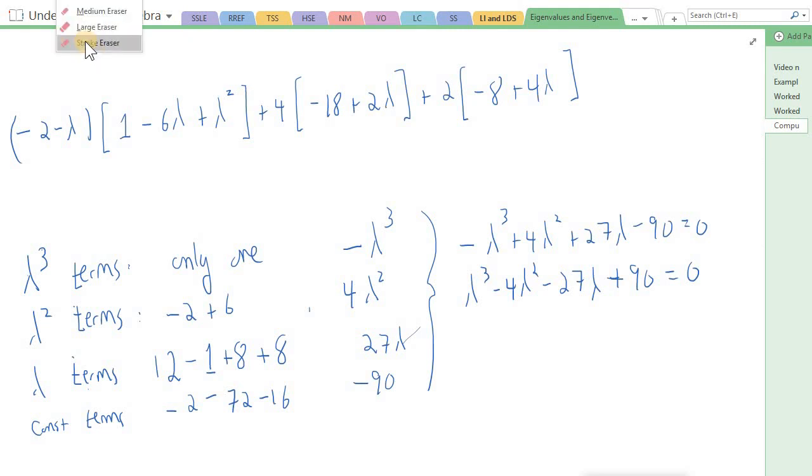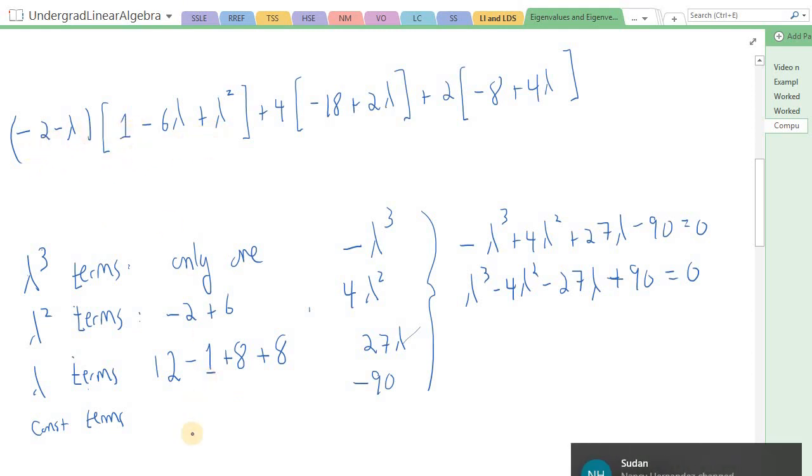Now, let's try the next one and see if we can do this in a similar way. And so let's follow this out. Now, the constant terms from the first group here, I have the minus 2 times 1. So that's minus 2. Then from here, I'm going to have 4 times minus 18. So that's minus 4 times 18. I think that's minus 72. And here I have 2 times minus 8, which is minus 16. And that gives me minus 90. So I've gotten the terms one by one. It's an important skill to be able to do this.